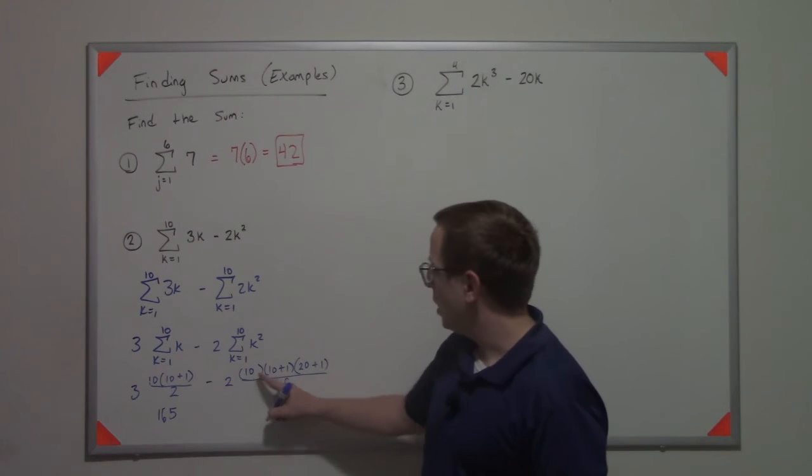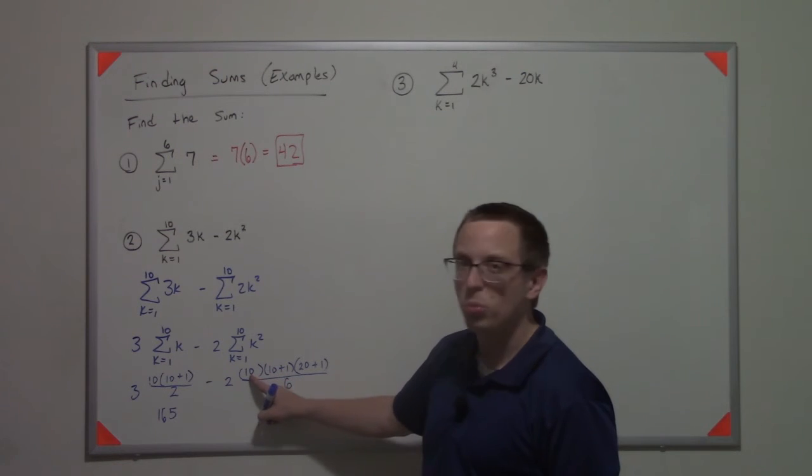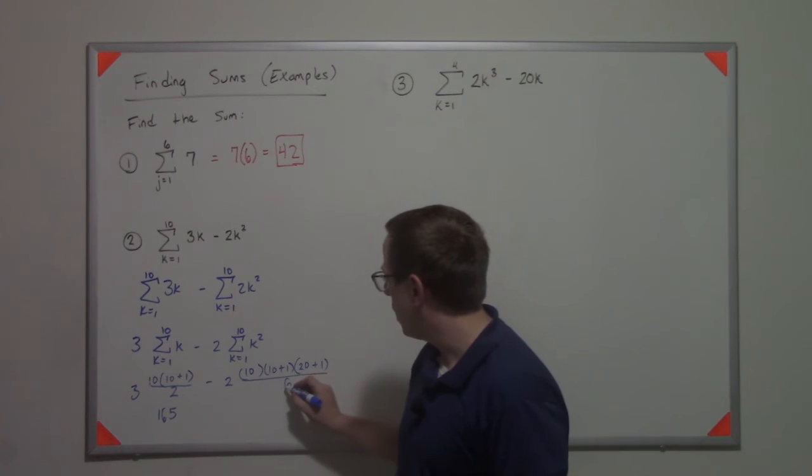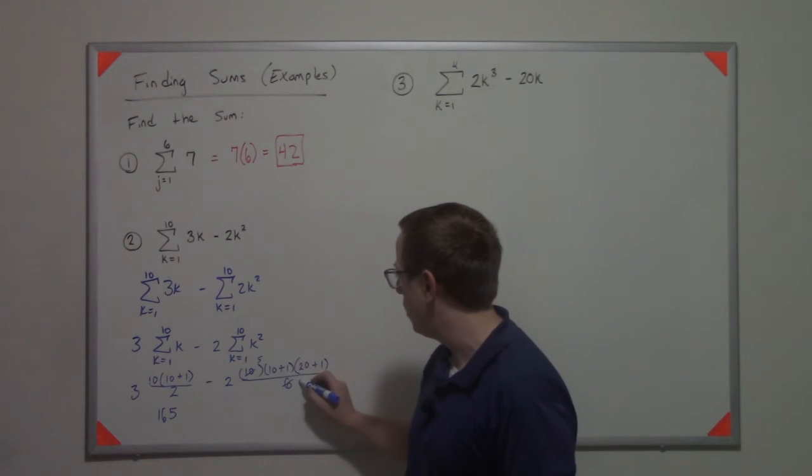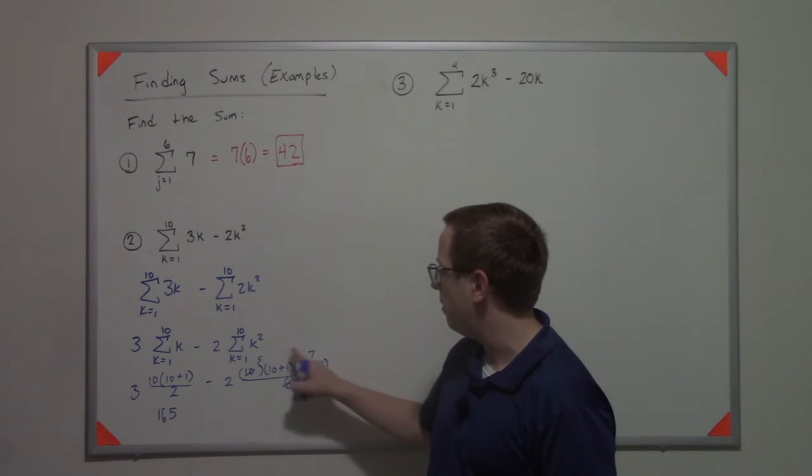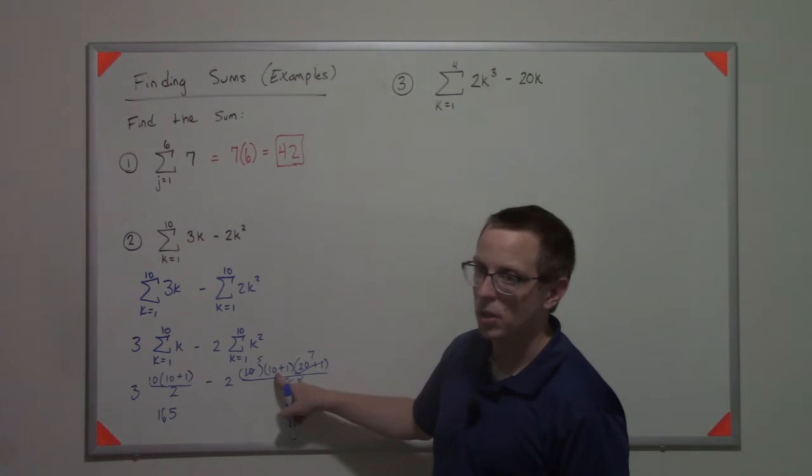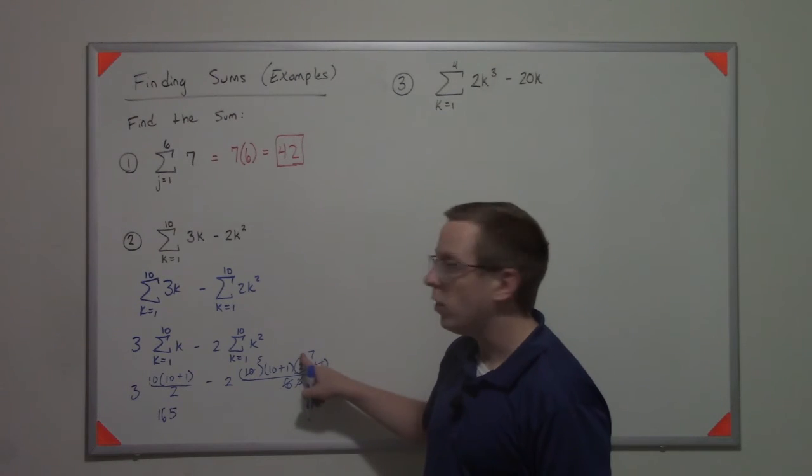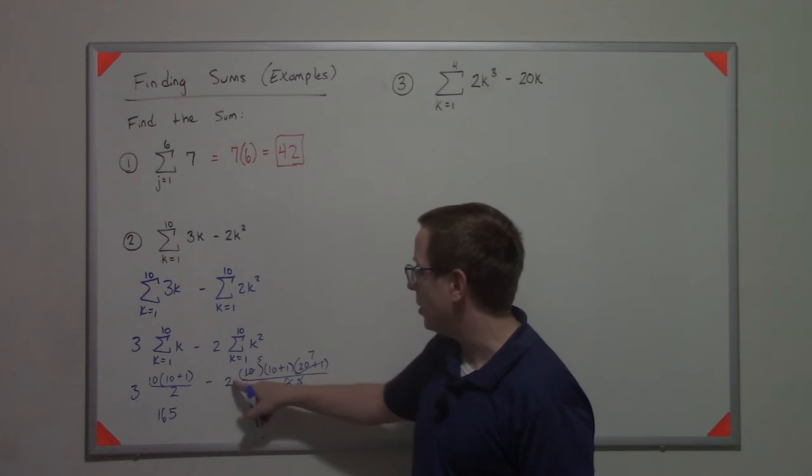And this is 100. So if I do some pre-cancellation here, that'll cancel into 5 with a 3 left over. That 21 will cancel into a 7. So now I have 5 times 7 times 11. So that's 35, which then I'm actually gonna multiply by the 2. So I get 70 times 11.